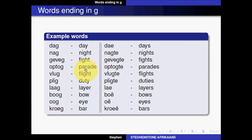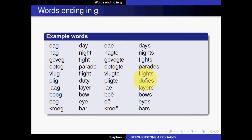The English word 'parade' in Afrikaans is 'optog,' and the plural 'parades' in Afrikaans is 'optogte.' The English word 'flight' in Afrikaans is 'vlug,' and the plural 'flights' in Afrikaans is 'vlugte.' The word 'duty' in Afrikaans is 'plig,' and the plural 'duties' in Afrikaans is 'pligte.'